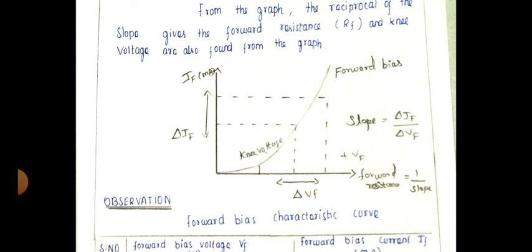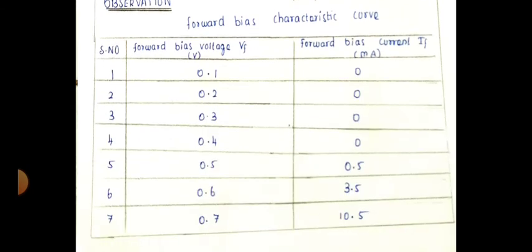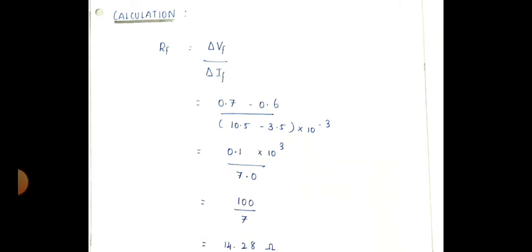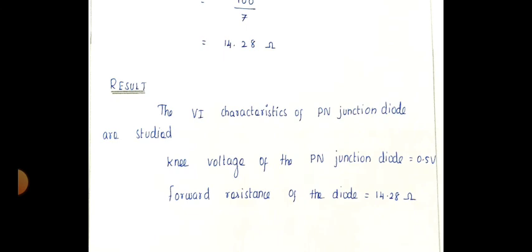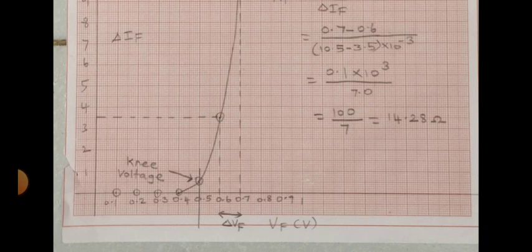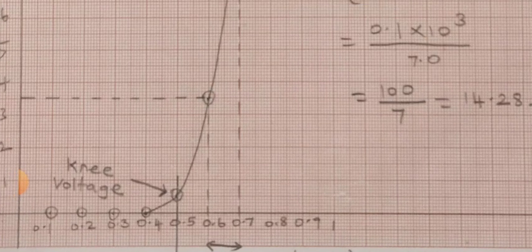In the model graph, Vf is taken on the x-axis and If on the y-axis. Draw the graph — it is a forward bias graph. From the graph, find delta Vf and delta If. The slope is delta If by delta Vf; the forward resistance is the reciprocal of the slope. For the calculation: delta Vf by delta If equals (0.7 minus 0.6) over (10.5 minus 3.5) into 10 to the power minus 3, giving 0.1 into 10 cubed divided by 7, which is 100 by 7 equals 14.28 ohm. The knee voltage is 0.5 V — that is the point where the graph bends.